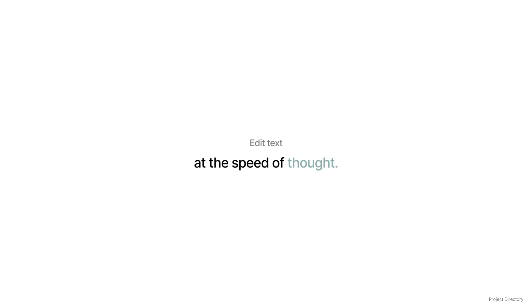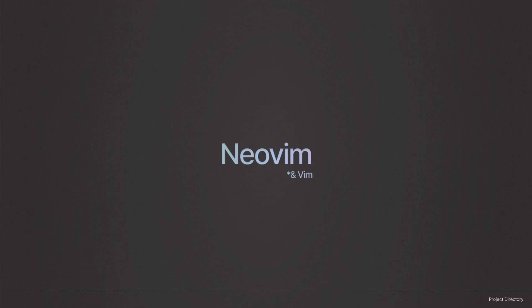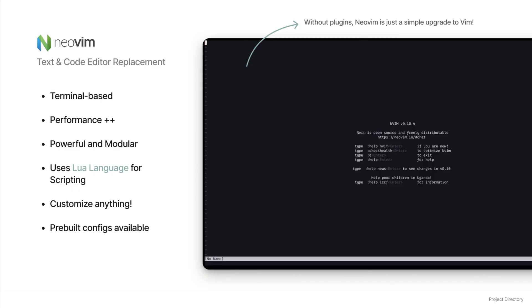You can't talk about terminal-based text editors without mentioning Neovim. It's a fork of the legendary Vim, which is a modal text editor, but with a focus on community-driven development through plugins. Neovim is incredibly powerful and modular — you can turn it into a full-fledged IDE for any language with the right plugins and configuration. The configuration is done in Lua, just like WezTerm, which allows for a very powerful and customized setup.